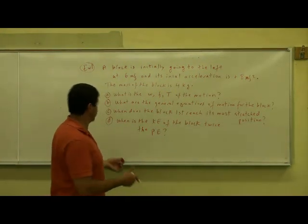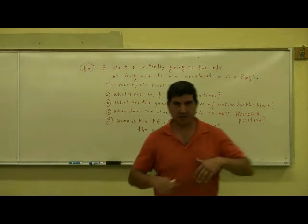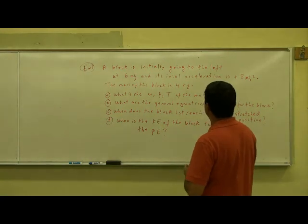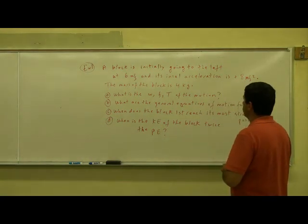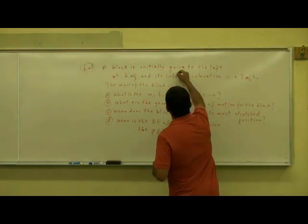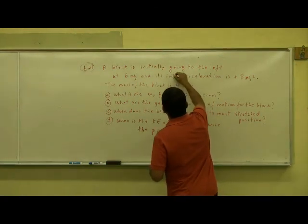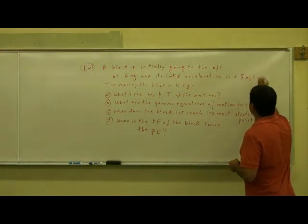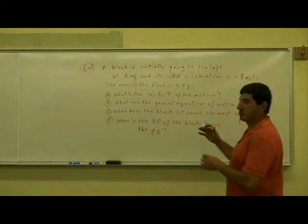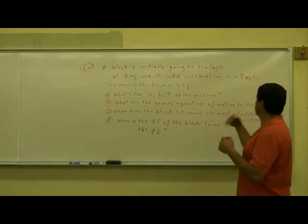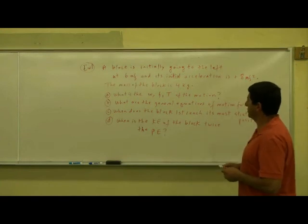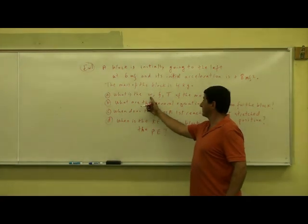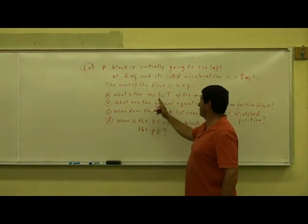Okay, so we have this example here. Let's read it aloud and then think about it. Example one: a block is initially going to the left at six meters per second, and the initial acceleration is equal to positive eight meters per second squared. So initially the block is moving to the left, and the acceleration is positive eight meters per second squared. The mass of the block is four kilograms.